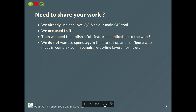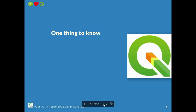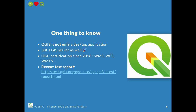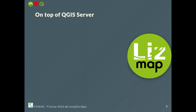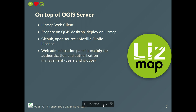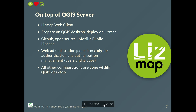We don't want to spend time again setting up the project — relations, forms, symbology, and everything. So one thing we need to know is that QGIS is not only a desktop application; there is also the server part. It has OGC certification since 2018, so it can deliver WMS, WFS, et cetera. You can find the link for the latest test report. On top of QGIS server, we can add LizMap Web Client. It's a PHP application. You prepare your QGIS desktop project, deploy it on the LizMap server — it's open source, you can find it on GitHub. There is only a main administration panel for users and group administration, and all the configuration is done within QGIS desktop.